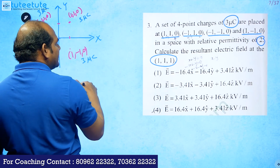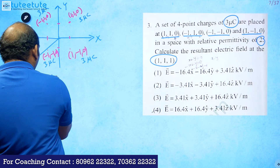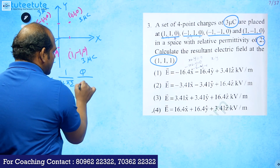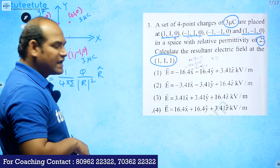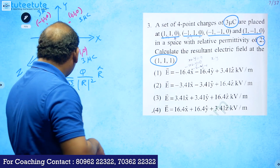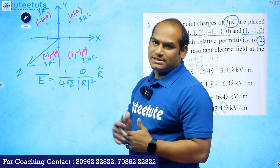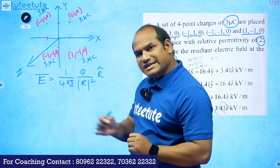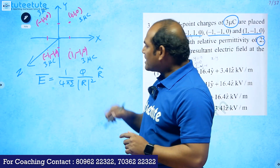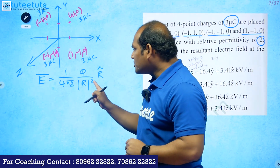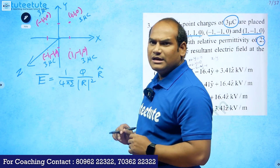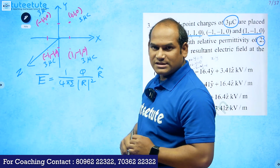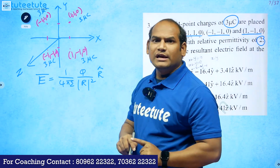The formula for the electric field due to a single point charge is E = (1/4πε) × (q/|r|²) × r̂. This is the general formula for the electric field due to point charge q. Here r̂ is the unit vector of the distance vector r, and the magnitude squared of r appears in the denominator. The charge q is three micro coulombs.